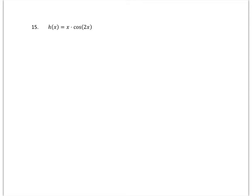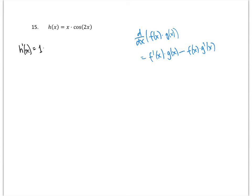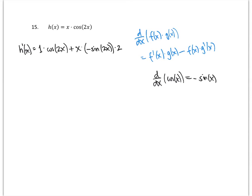For this example we have a product, so we need the product rule: the derivative of f(x) times g(x) is the derivative of the first times the second, plus the first times the derivative of the second. Our two functions are x and cosine of 2x. The derivative of x is 1, giving 1 times cosine 2x. For the derivative of cosine 2x, recall that the derivative of cosine is minus sine, and using the chain rule we multiply by 2, giving minus 2 sine 2x. So the result is cosine 2x plus x times (−2 sin 2x).